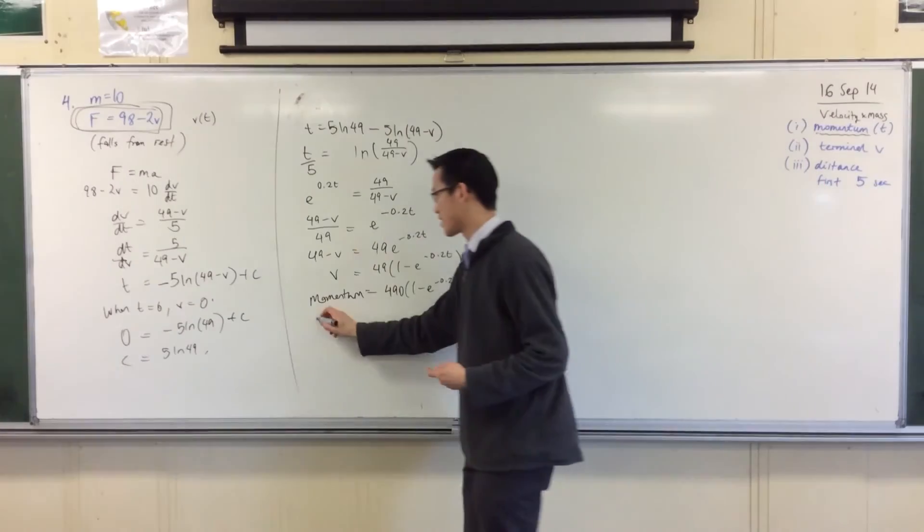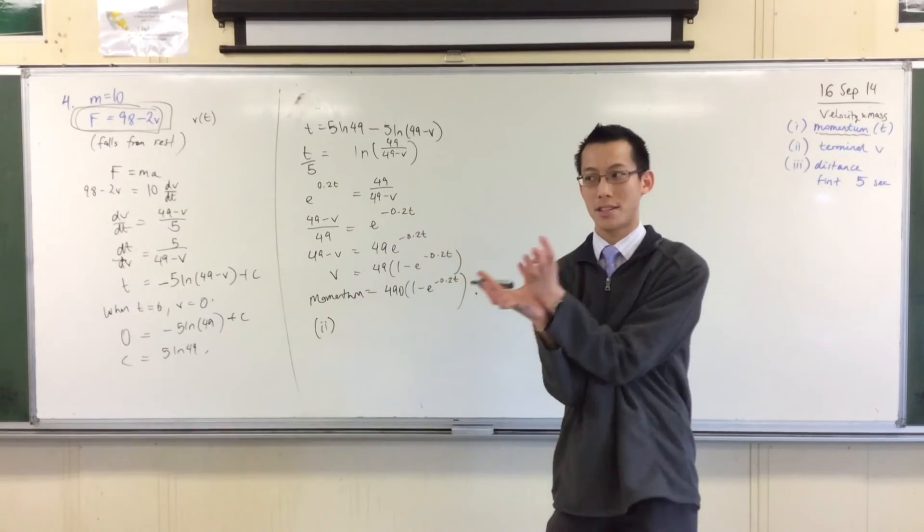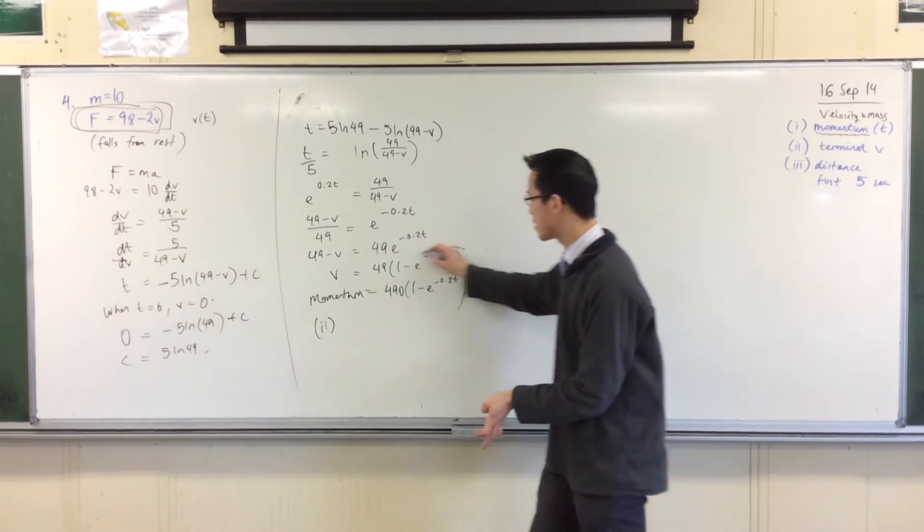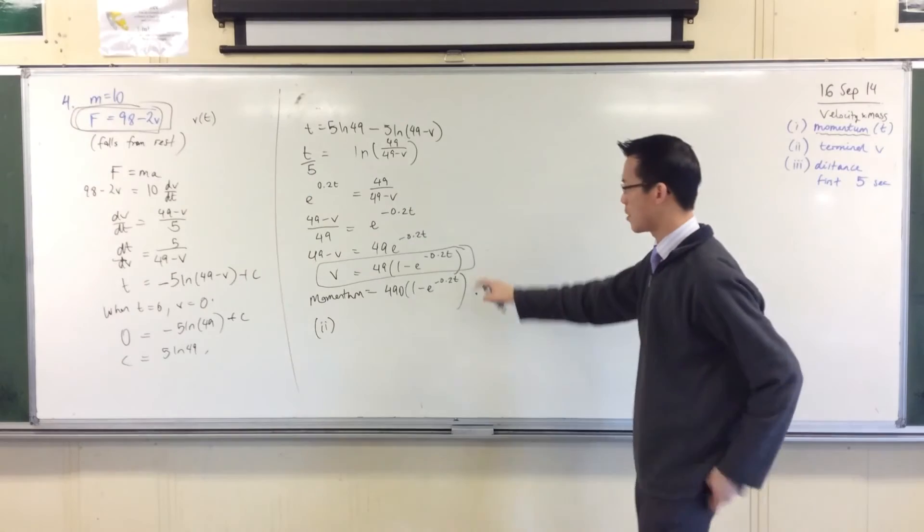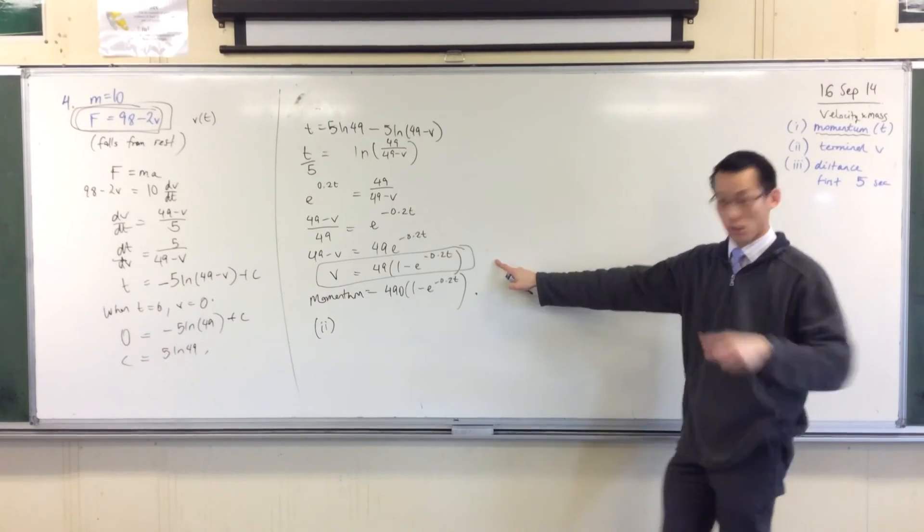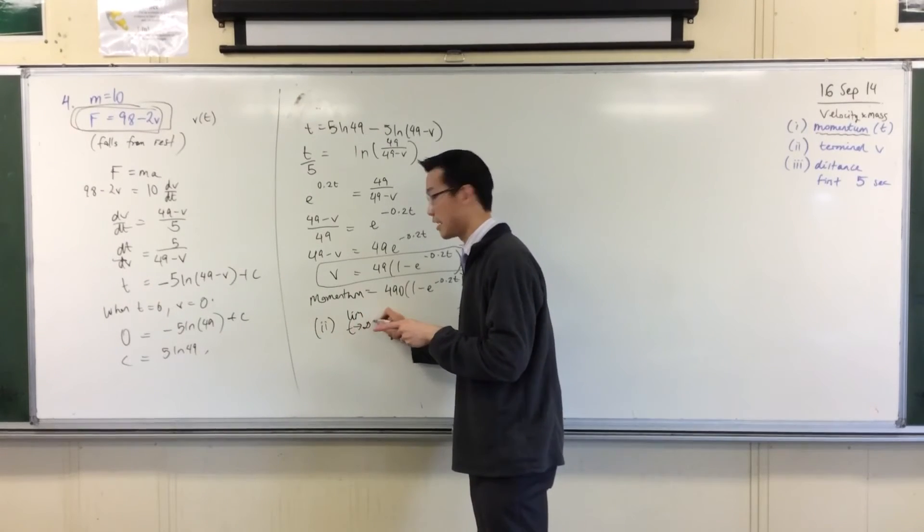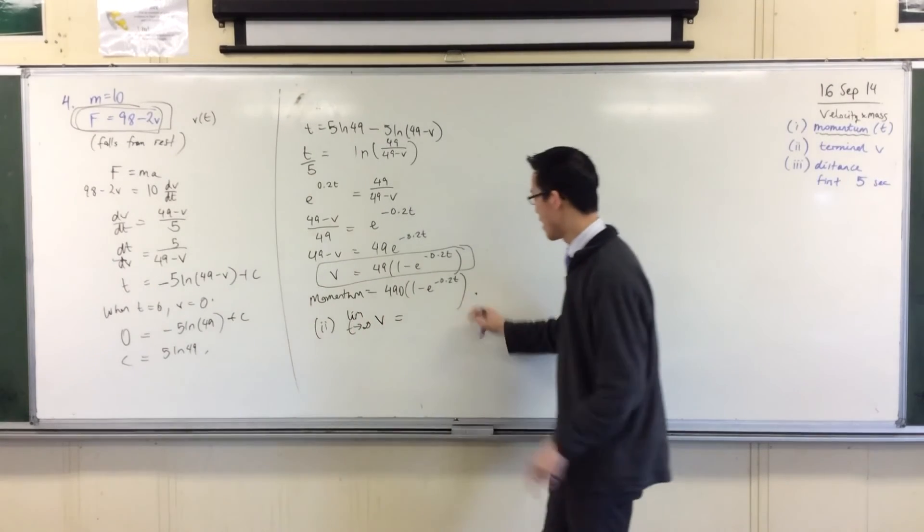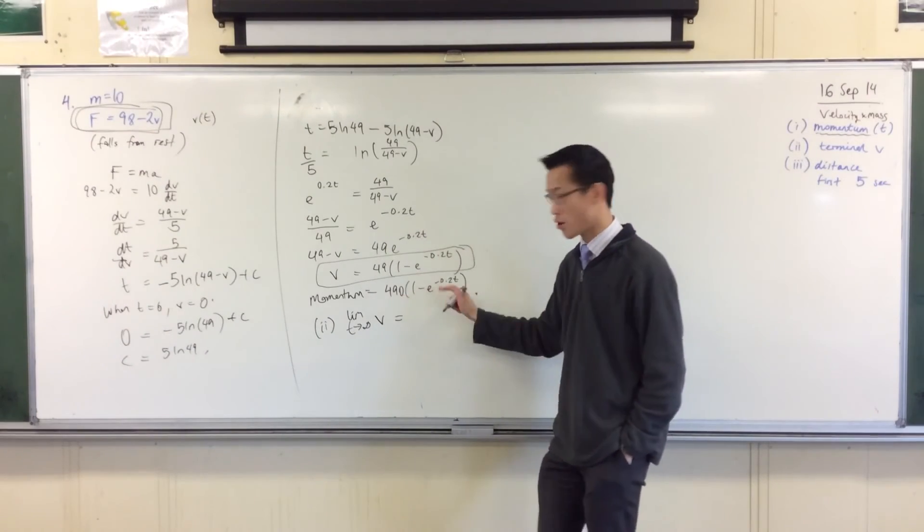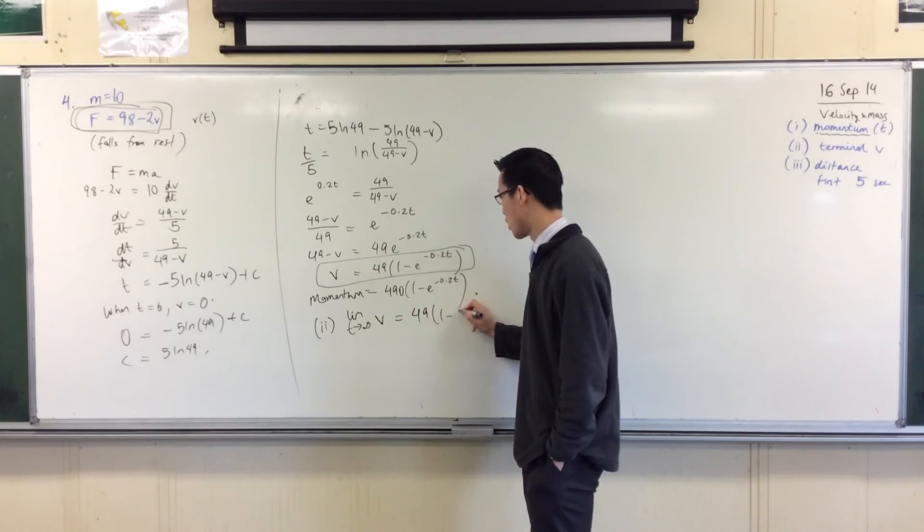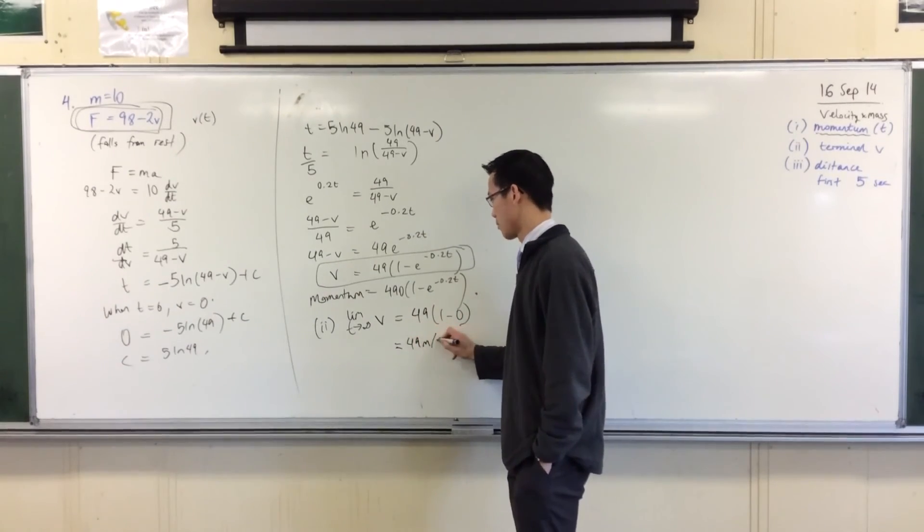Very quickly, let's go through parts two and three, because they're relatively simple. I'm looking for a terminal velocity, and this is, if you get to this point, terminal velocity is extension one stuff. How do you get a terminal velocity out of this equation? Good, right? So, you're really saying the limit as t approaches infinity of the velocity, right? And you can see this is going to be on the denominator. It's going to shrink to zero, so you're going to get 49 times 1 minus 0, which is 49 meters per second. That's good.